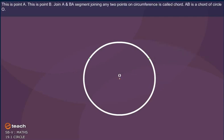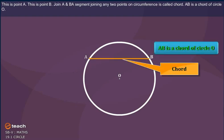This is a point A. This is a point B. Now join A and B. A segment joining any two points on circumference is called chord. A, B is a chord of circle O.